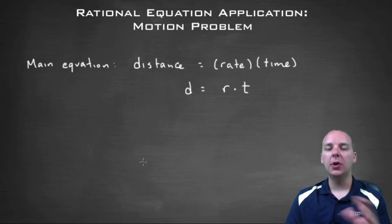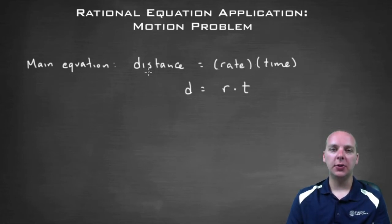Very basic physics - these three quantities are all related by a simple equation. It's distance equals rate times time. Again, the distance that you traveled is equal to the rate of speed that you're traveling, times how long you traveled at that speed.